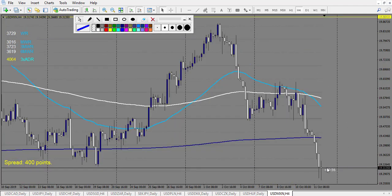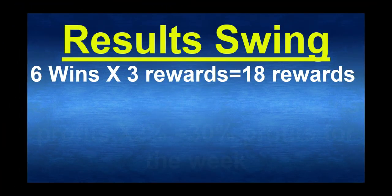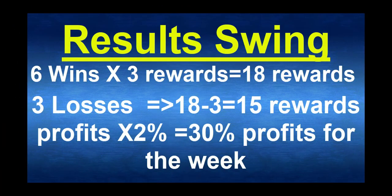That's it for the week. Results for the swing trading strategy: 6 wins, 3 losses. Each win targets 3 rewards, making 18 rewards minus 3 losses equals 15 rewards. Times 2% of your account size, that makes 30% profit with the swing trading strategy last week.